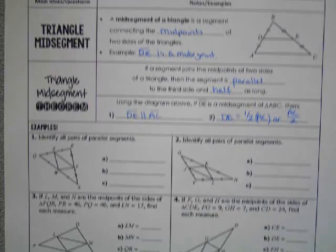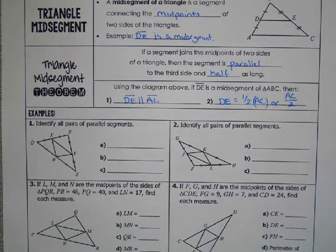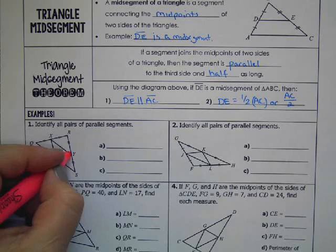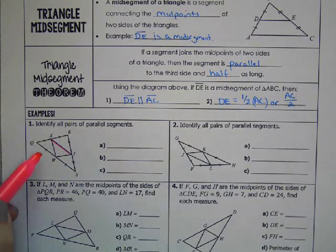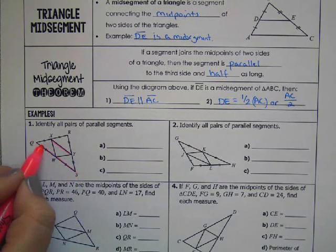So if we want to identify all pairs of parallel segments, first of all, we can highlight one of them, XY. So XY would have to be parallel to QS. That would be our first set.